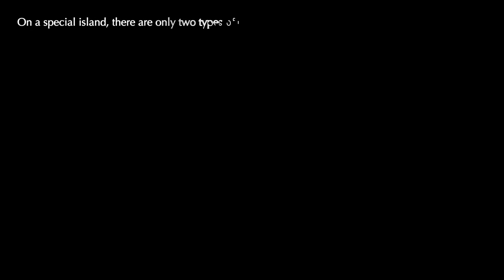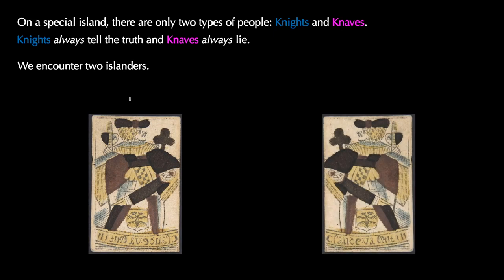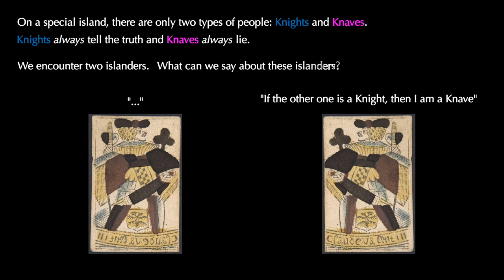Let's end with one last knights and knaves problem whose solution depends on the conditional connective. Recall that on this special island, knights always tell the truth and knaves always lie. Suppose we encounter two islanders: the first says nothing, but the second says 'if the other one is a knight, then I am a knave.' What can we say about these two islanders? Can you figure out if they're knights or knaves? Can you also see how to use the biconditional connective to simplify something from the first video about logic and knights and knaves puzzles?